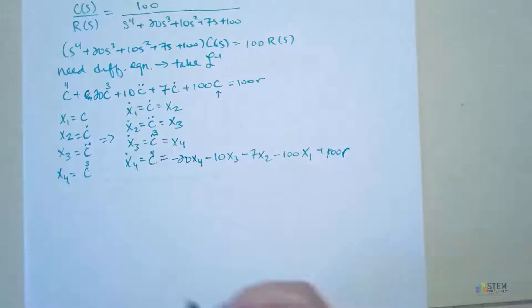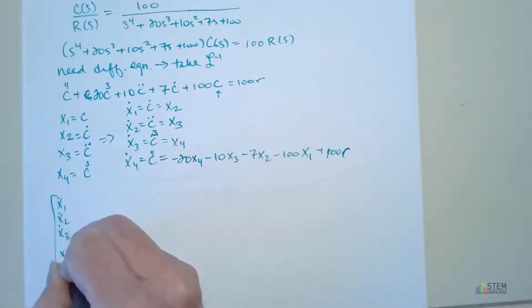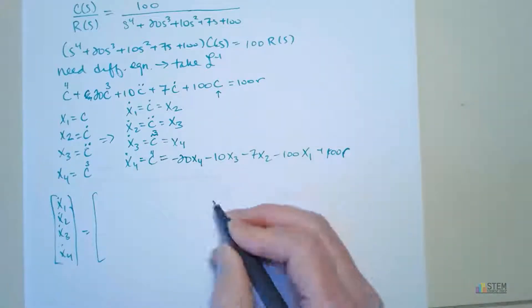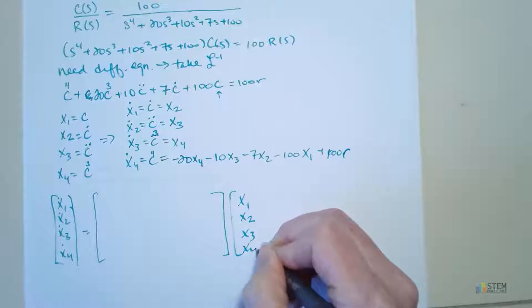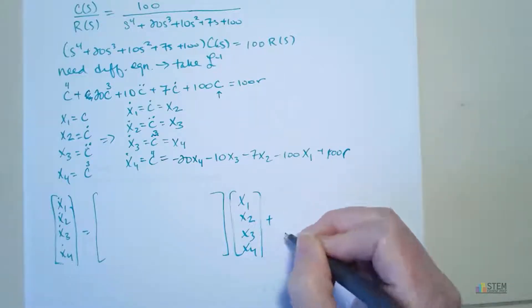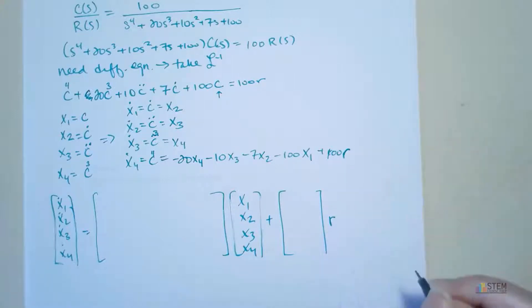So the derivative of your state vector goes on the left. And then we got our matrix A. We got the state vector. And then plus matrix B times R, which is our input. And now you just have to fill in the coefficients.